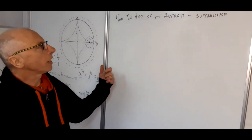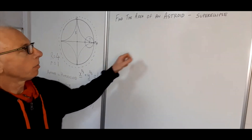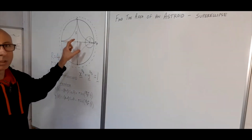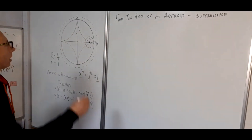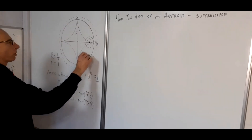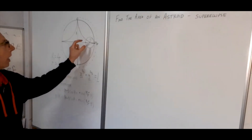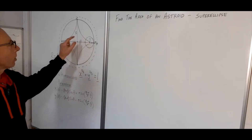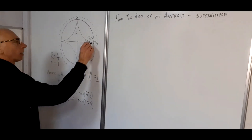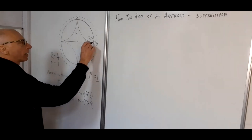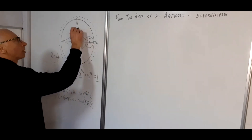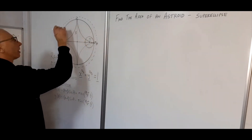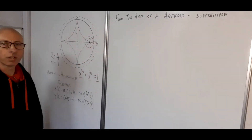In this video we're going to find the area of an astroid. An astroid is a super ellipse which has been drawn out on this diagram. We've got a circle with radius one, and inside we've got a little circle drawn with a quarter of the radius of the big one. There's a mark on this little radius which inscribes this shape as the small circle is rotated against the inside of the big circle.